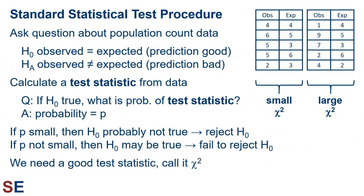The standard statistical test procedure for doing a chi-squared analysis works like this. First, we ask a question about population count data. For our test, we need an idea about how we expect the data to be — some kind of model that makes a prediction about how many values should be in each of the categories. Then our null hypothesis will be that the observed number of counts in each category will equal the expected number. If this happens, then our prediction is good. Our alternative hypothesis will be that the observed number of counts in each category does not equal the expected number. If this happens, then our prediction is bad.